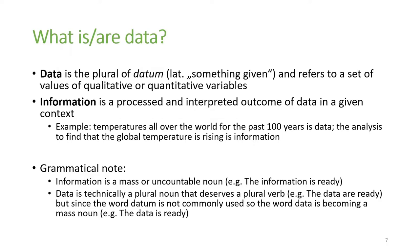First, what actually is data? By definition, data refers to a set of values of qualitative or quantitative variables. Data is different from information, which is best illustrated by this example: if we have temperatures all over the world for the past hundred years, that is data. If we analyze this data and find that global temperature is rising, that's not data — that's information.